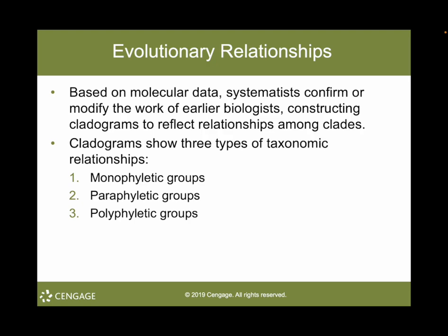Molecular data help systematists confirm or modify the work of earlier biologists constructing cladograms to reflect evolutionary relationships among clades. Cladograms show three types of taxonomic relationships: a monophyletic group includes the ancestral species and all of its descendants; a paraphyletic group contains a common ancestor and some, but not all, of the descendants; and a polyphyletic group consists of several evolutionary lines that do not share the same recent common ancestor. You will see this on your test.